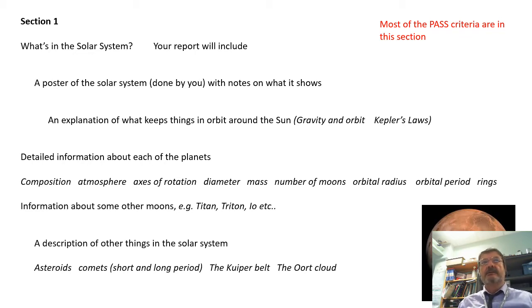Plus, you can put that information in a table as well. A lot of the numeric information can go in a table. Information about some interesting moons such as Titan, Triton, Io, maybe one or two others. A description of other things in the solar system such as asteroids, comets, the Kuiper belt, and the Oort cloud. About half a page on each of those, saying where it is and what it is, anything else interesting about it.